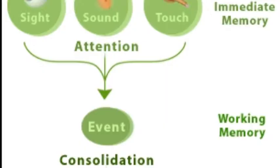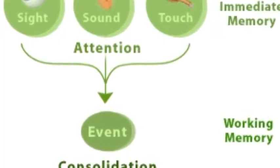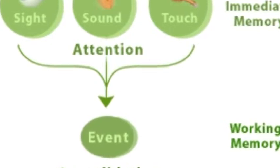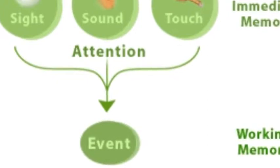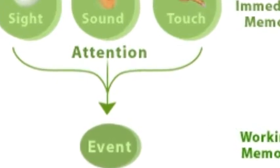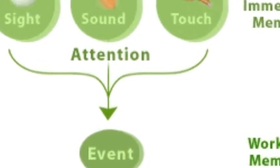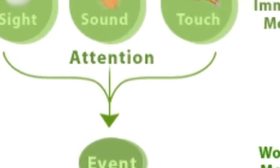When your brain stores a memory, it makes another decision about how important that memory is. The brain constantly filters and prioritizes information to avoid becoming overloaded with unnecessary or unimportant information. Memories that only need to be retained for a brief time are put into short-term memory. For example, you might need to remember a phone number only long enough to dial the number or to save it in your phone.